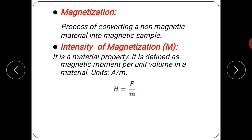The flux density B_P is equal to mu_0, the absolute permeability, multiplied by the field intensity H. The formula for magnetization gives B equals mu_0 times mu_R times H, where mu_R is the relative permeability and H is the field intensity.